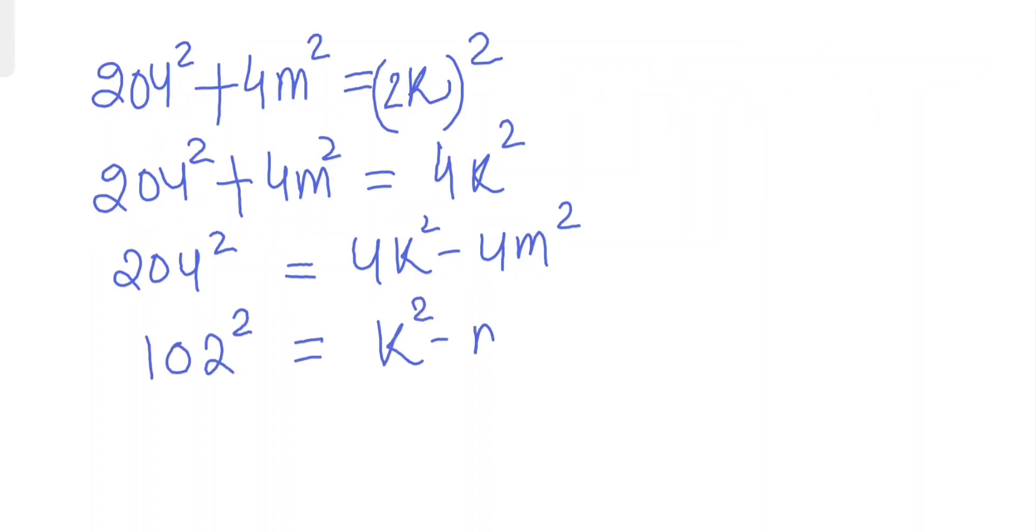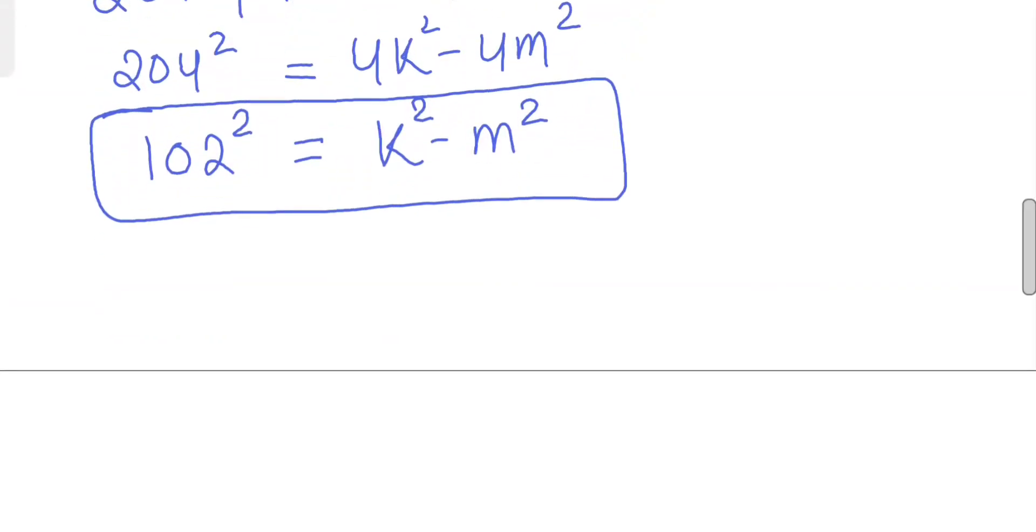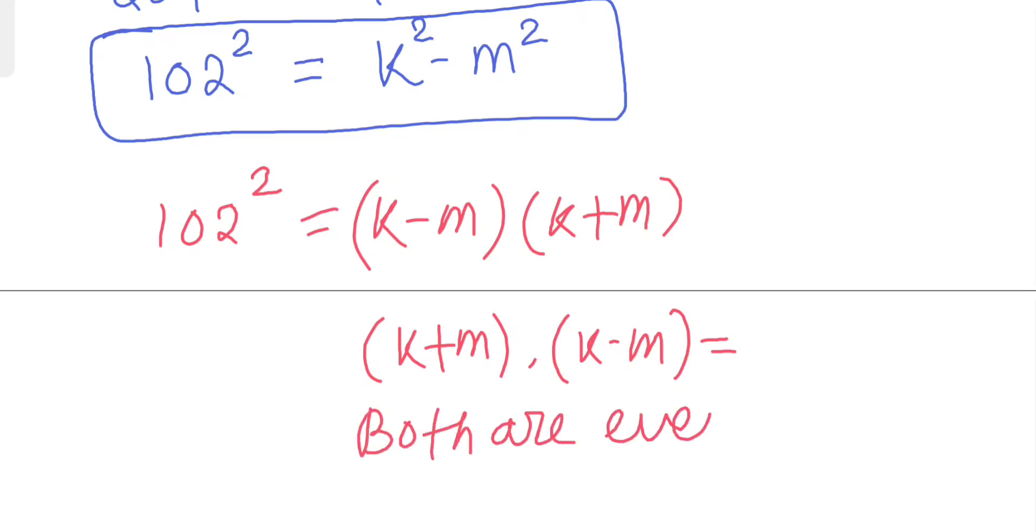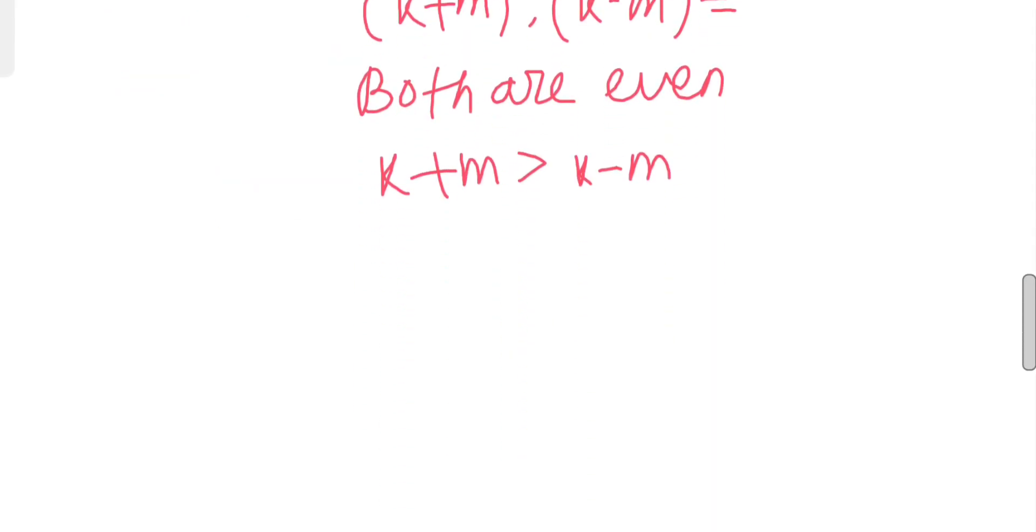We have to solve this equation. Quickly we'll see that 102² equals (k - n) times (k + n). As you know, k + n and k - n are of the same parity, both are even. And k + n is clearly more than k - n. Now we have to factorize 102².